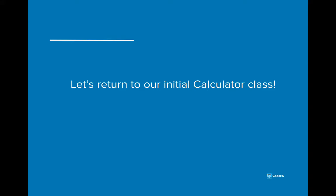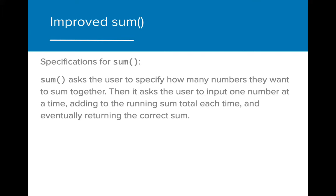Now that we've learned a bit more about while loops, let's return to our original calculator class problem. Let's make an improved sum method where the user is asked how many numbers they want to sum together. Then it asks the user to input one number at a time, adding it to the running sum total each time. Using a while loop, how might we be able to accomplish this task? Pause the video and try to write out the steps.